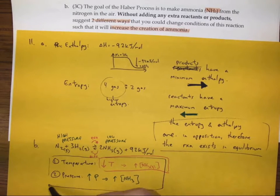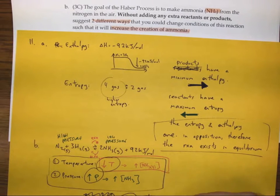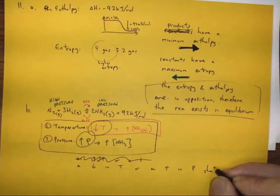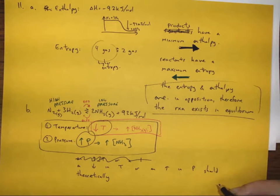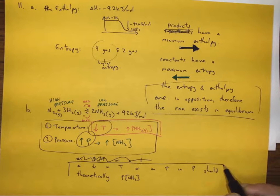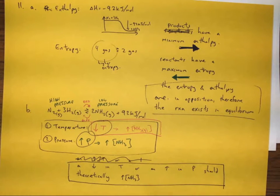We've suggested two different changes: a decrease in temperature or an increase in pressure should theoretically increase the ammonia created. Now, in reality, this is such a slow reaction that if we decrease the temperature we react much more slowly. So when we actually do the Haber process, we don't decrease the temperature, but we do increase the pressure quite a bit.